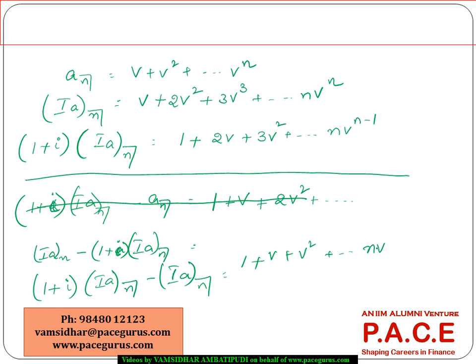And logically, if we see, this is nothing but the annuity due for a level annuity, annuity due for a level annuity minus nv power n. And obviously, here if I take out iA_n outside, it is 1 plus i minus 1. So this is coming out as i.